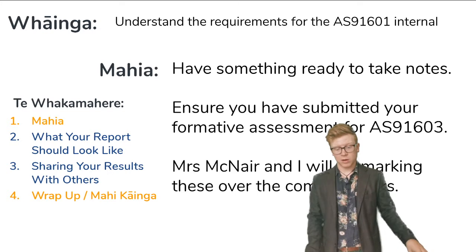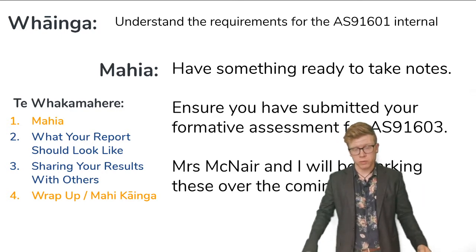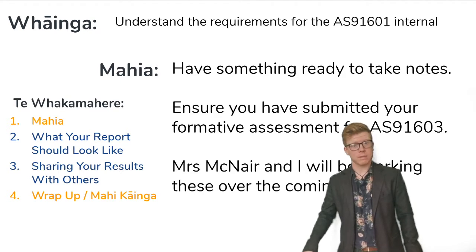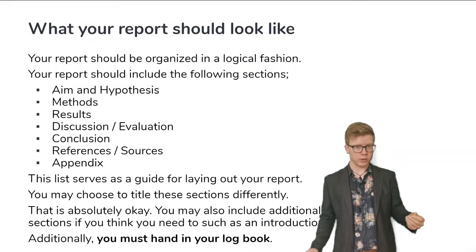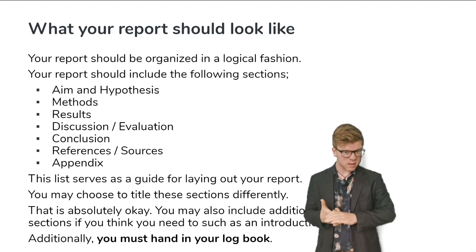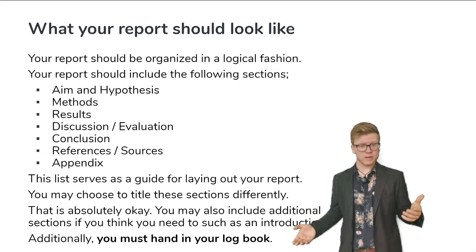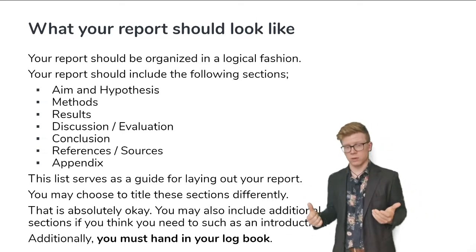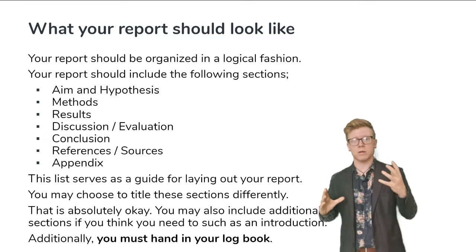The topic of this video is to understand the requirements for the internal that you'll be working on over the holidays. I'm going to try and make it as clear as possible. Miss McNair has made some amazing resources which I'll be referring to throughout. What should your report look like? The sections you need to include are: aims and hypotheses, methods, results, discussion and evaluation, a conclusion, references, and possibly an appendix. The titles don't have to be exact — you might want to include an introduction or give sections slightly different names. That's absolutely fine as long as you're following a logical scientific report layout.